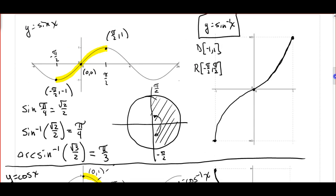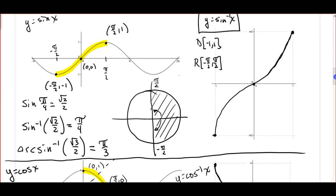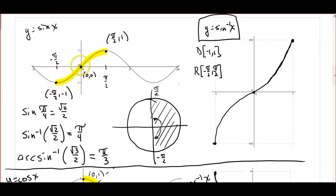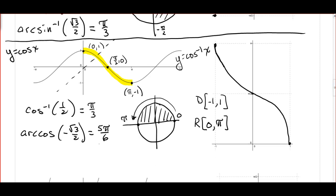Quick review: for inverse sine, we use the right half of the circle, going from negative pi over 2 to positive pi over 2. For the inverse cosine, we start at 0 and go to pi, which corresponds to the top half of the circle. I'm going to end the video here — watch the next video for inverse tangent and a couple more examples. If you have questions, write them down and ask me the next time you see me.